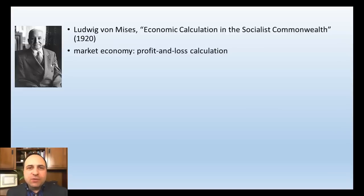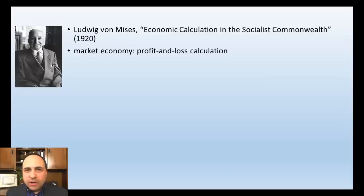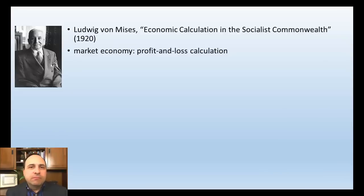When we talk about socialism in the sense in which Mises means it, we're referring to a system in which the government owns the means of production. The means of production are the things used in the production of consumer goods — the things you buy at Walmart or Toys R Us. The machinery, factories, the physical plant — all those things are called the means of production.